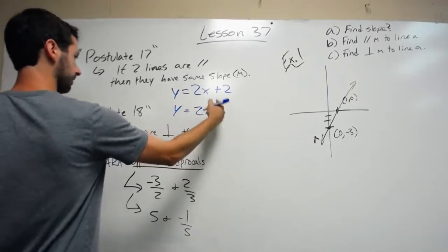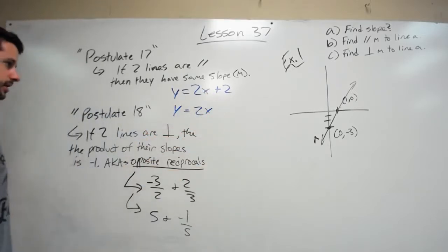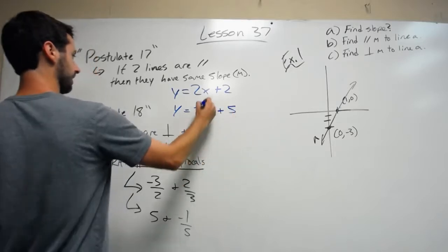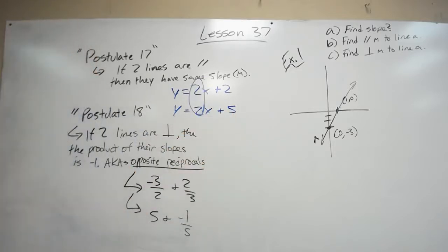The y-intercept can be anything, but since they have the same slope of 2, the lines are parallel.